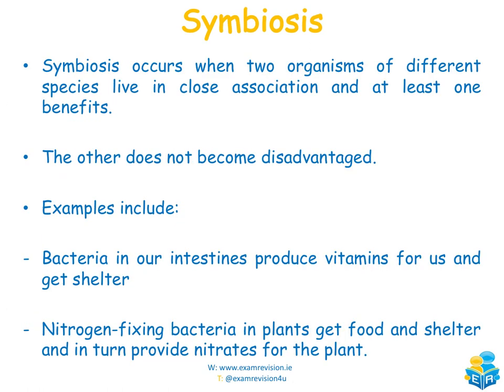Symbiosis occurs when two organisms of different species live in close association and at least one benefits — but in contrast to parasitism, neither becomes disadvantaged. For example, bacteria in our intestines produce vitamins for us and get shelter in return. Nitrogen-fixing bacteria in plants get food and shelter from the plant, and in turn provide nitrates for the plant — both benefit with no disadvantage to either.